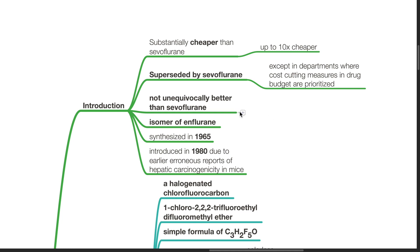It is not unequivocally better than sevoflurane. Isoflurane is an isomer of enflurane synthesized in 1965. It was introduced in 1980 due to earlier erroneous reports of hepatic carcinogenicity in mice.